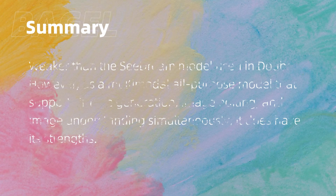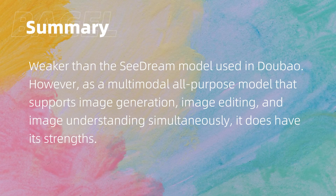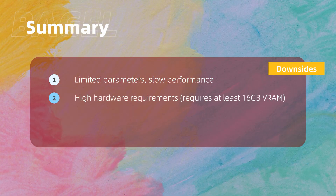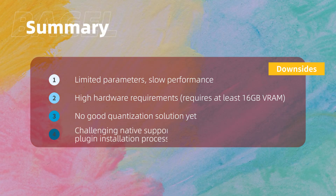In summary, ByteDance's open-sourced Bagel model is noticeably weaker than the C-Dream model used in Doobao. However, as a multimodal all-purpose model that supports image generation, image editing, and image understanding simultaneously, it does have its strengths. The downsides include limited parameters, slow performance, high hardware requirements (at least 16GB VRAM), no good quantization solution yet, and a complicated plugin installation process for ComfyUI. For those who want to experiment, feel free to download the integrated package, but be careful not to mess up your environment. That's it for today's video — see you next time.